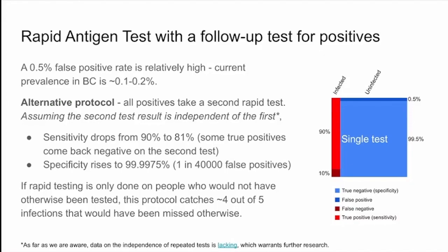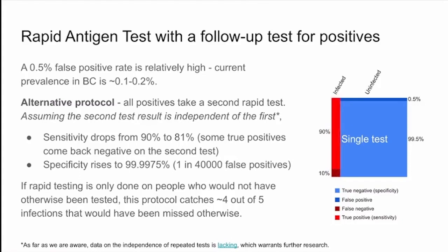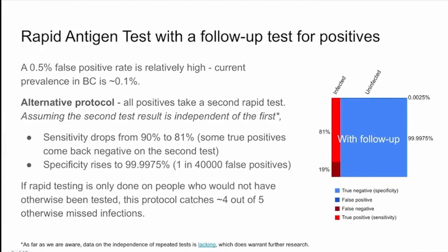A quick visual summary: here you can see some fraction of the population is infected and the rest is not infected. With a single test, you catch 90% of those who are infected and miss 10%. At the same time, you correctly identify 99.5% of the uninfected as uninfected, but 0.5% come back as incorrectly positive. When you do the follow-up test, the number of infected individuals you identify drops slightly, and the number of false negatives goes up — but the number of false positives decreases to a tiny sliver.